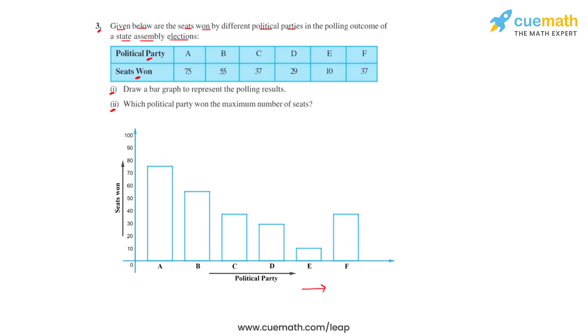The number of seats won by them is on the y-axis. On the y-axis we have taken a scale of one unit representing 10 seats. On the x-axis we have maintained equal widths for all the bars and equal gaps between them.